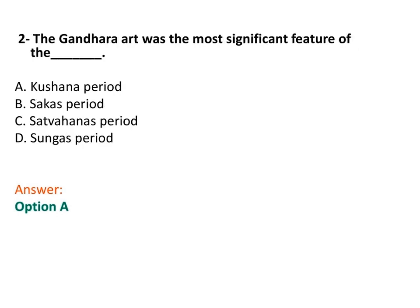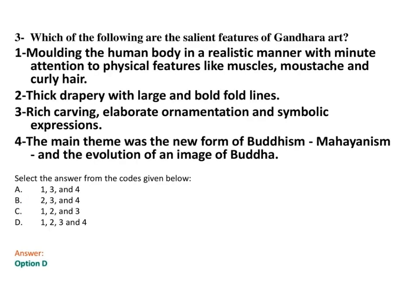Second question: The Gandhara art was the most significant feature of which empire? The answer is the Kushans. In the next video I will discuss the various schools of art like the Gandhara school of art and the Mathura school of art, including their features. Here some features of Gandhara art are mentioned in this question, and the answer is option D — all four points given are correct. We will discuss these in detail in the next video.